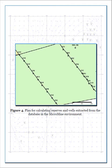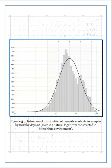At the first stage of work with the database, a statistical analysis of the distribution of values of Ilmenite content of the Berzoloff deposit was performed. The distribution in the samples is estimated as bimodal log-normal (Figure 5). The bimodal distribution of a component in the geological sense is usually explained by two different geological processes, or two different stages of one process.